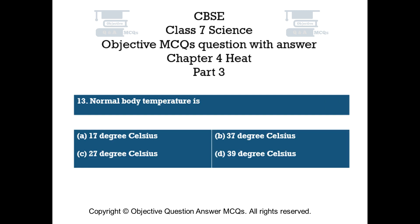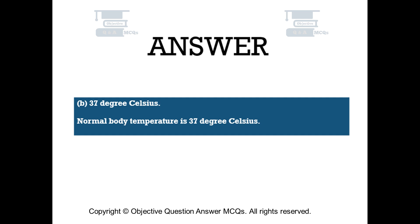Question number 13. Normal body temperature is: Option A 17 degree Celsius, Option B 37 degree Celsius, Option C 27 degree Celsius, Option D 39 degree Celsius. The right answer is Option B — 37 degree Celsius. Normal body temperature is 37 degree Celsius.